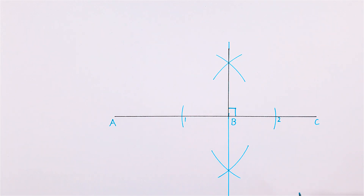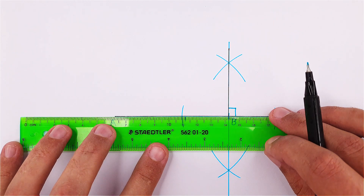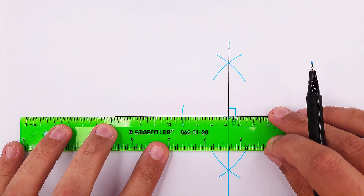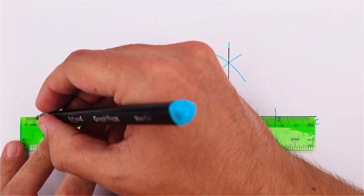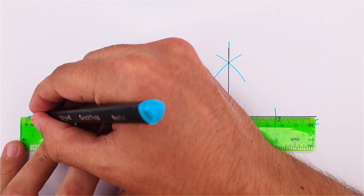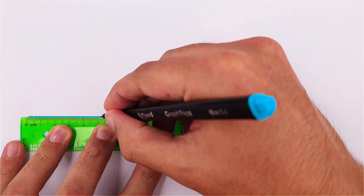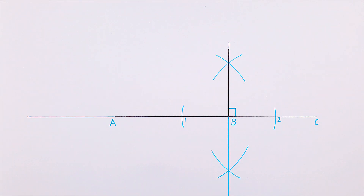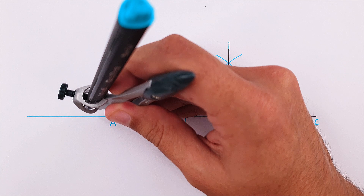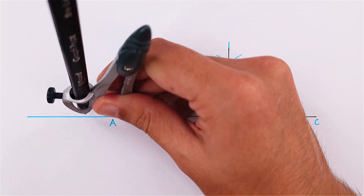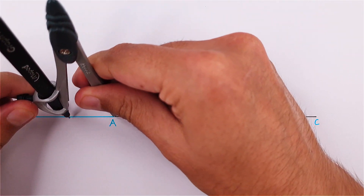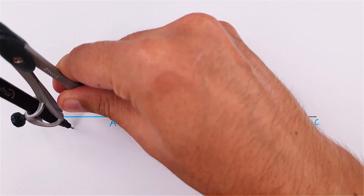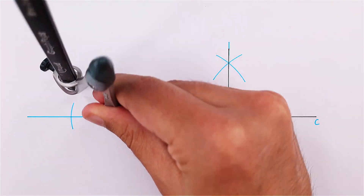If you want to draw a perpendicular line on point A, you will first need to extend line AC and follow the same steps as on point B. Using any measurement, draw an arc on both sides of point A.